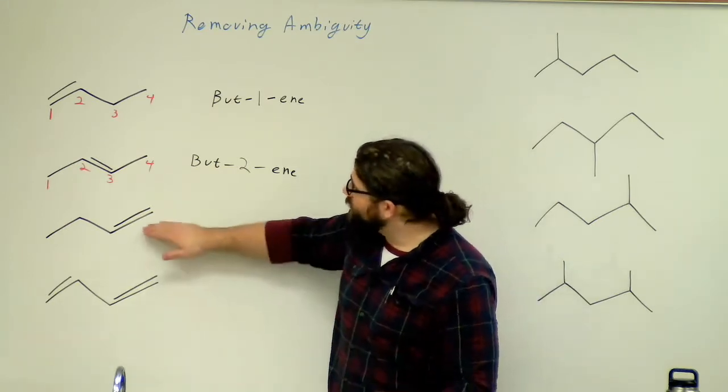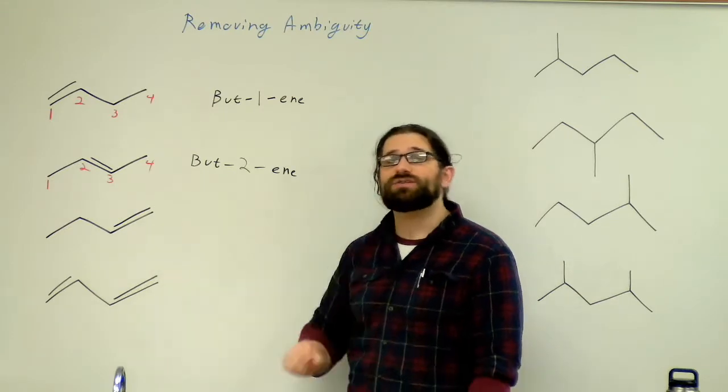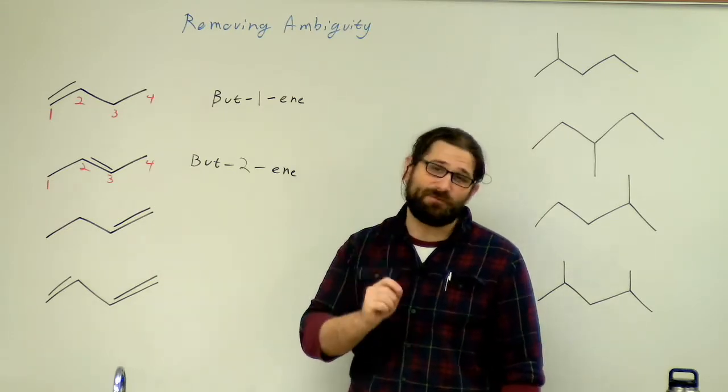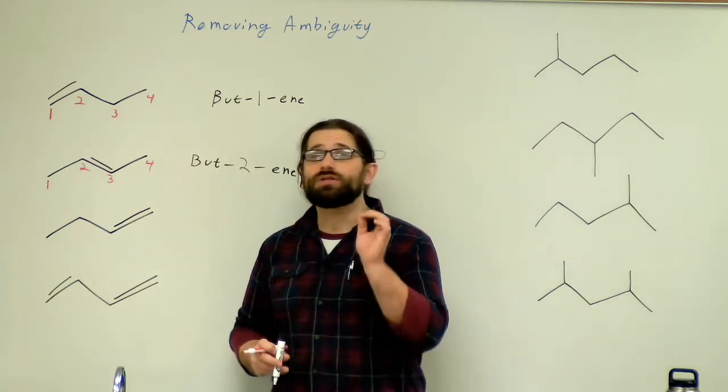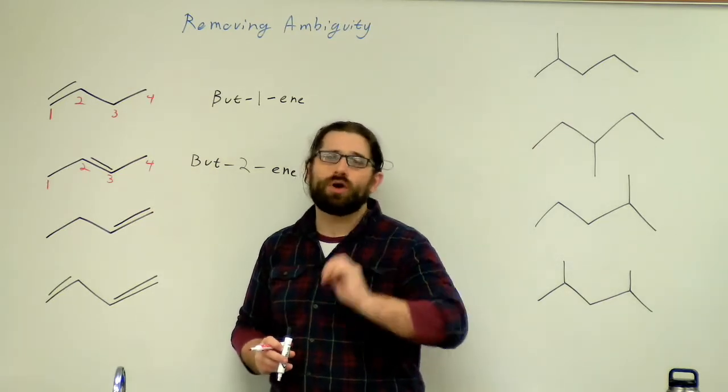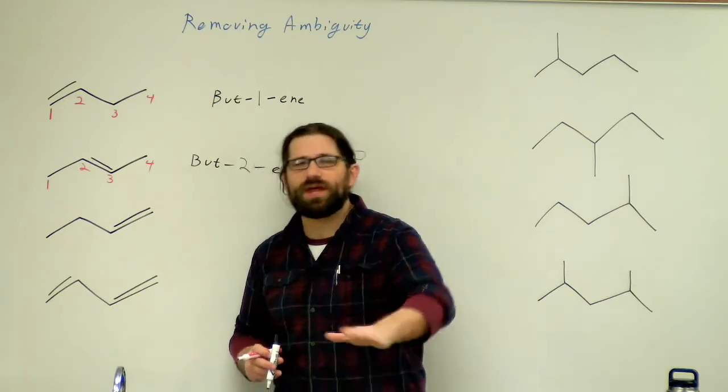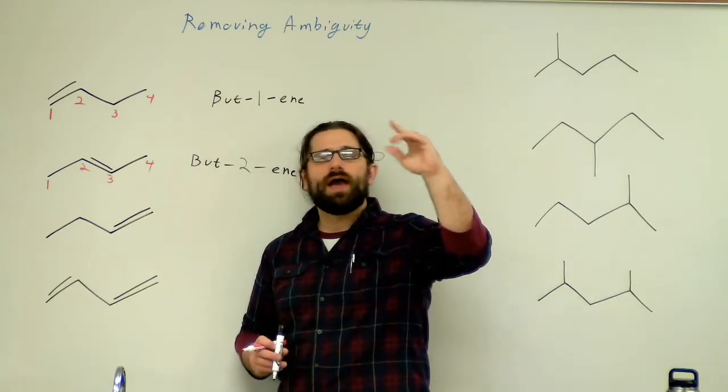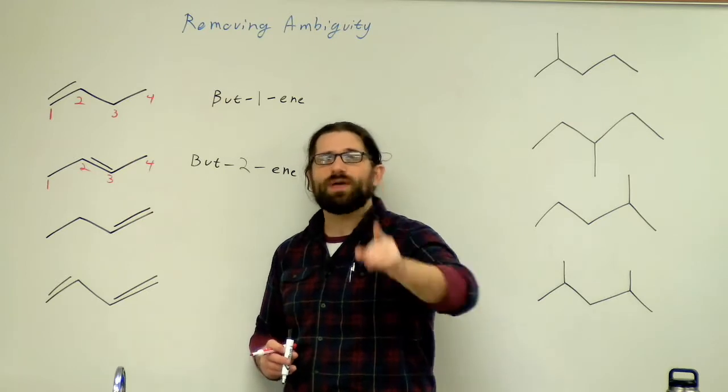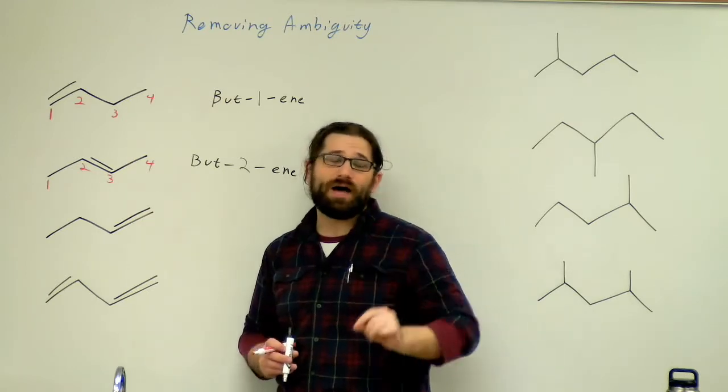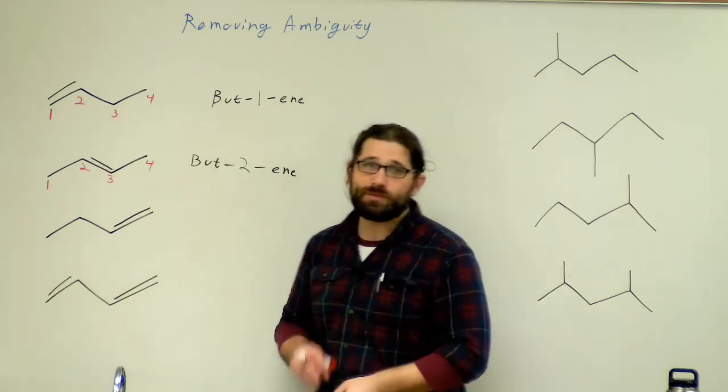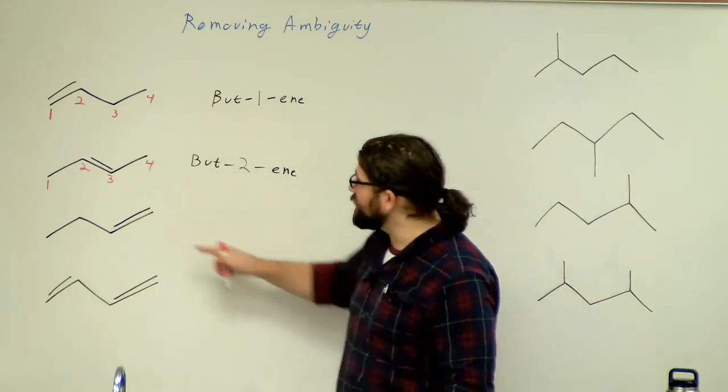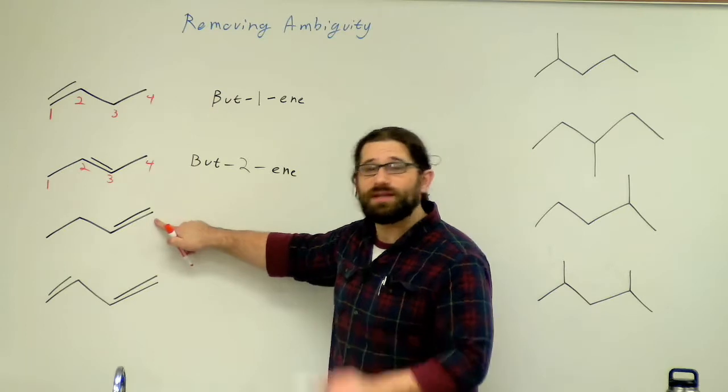So in order to name this correctly, I need to start numbering such that my constituent has the lowest number possible. That's going to be our rule. That's how we're going to do these. So in the case of this butene, I actually need to start numbering from right to left. When we talk about more complex functional groups, we're going to talk about orders of priority.